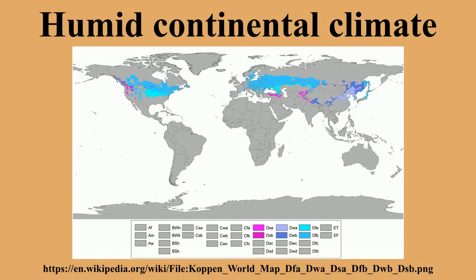In the Northern Hemisphere, some of the humid continental climates, typically in Scandinavia, Nova Scotia, and Newfoundland, are heavily maritime influenced, with relatively cool summers and winters being just below the freezing mark.